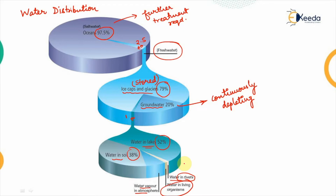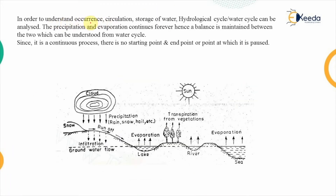Now that we understand water distribution, we will look at the hydrological cycle, also known as the water cycle, which continuously occurs on the earth's surface. To understand the occurrence, circulation, and storage of water, we analyze this cycle. Precipitation and evaporation continue forever — precipitation adds water to the earth's surface while evaporation reduces it, thereby maintaining a balance between the two.